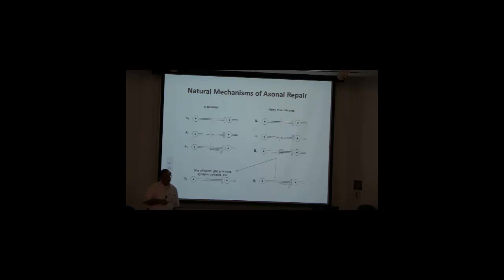In many invertebrates that we study, like Mr. Krabs, you do the same severance. You get the same sealing off of the proximal and distal ends. You get the same outgrowth at a millimeter or so a day, except the distal stump typically doesn't degenerate, but rather survives for weeks to months to years. And it's kind of an oddity.